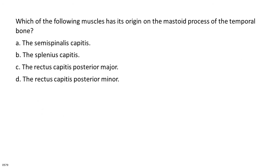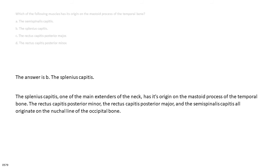Which of the following muscles has its origin on the mastoid process of the temporal bone? A. The semispinalis capitis. B. The splenius capitis. C. The rectus capitis posterior major. D. The rectus capitis posterior minor. The answer is B, the splenius capitis. The splenius capitis, one of the main extensors of the neck, has its origin on the mastoid process of the temporal bone. The rectus capitis posterior minor, the rectus capitis posterior major, and the semispinalis capitis all originate on the nuchal line of the occipital bone.